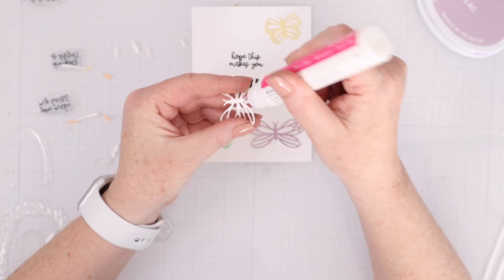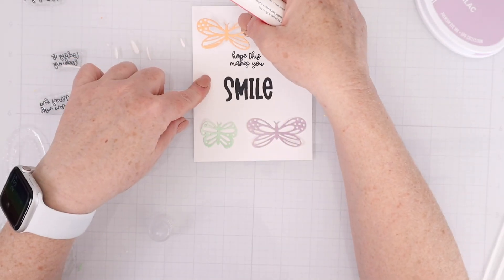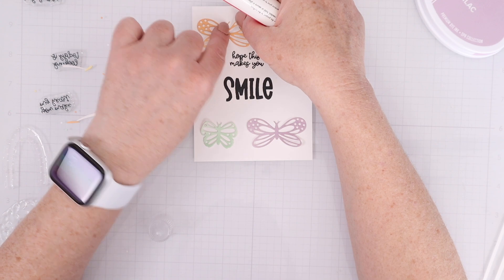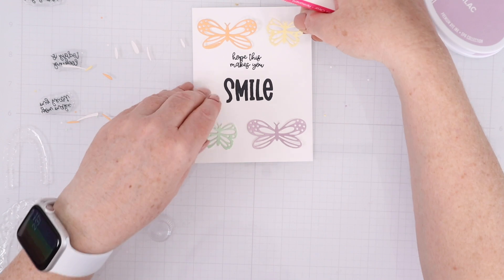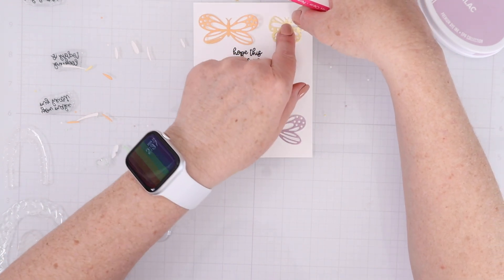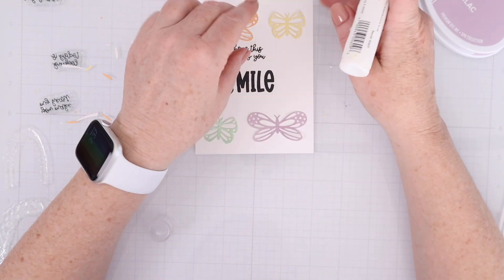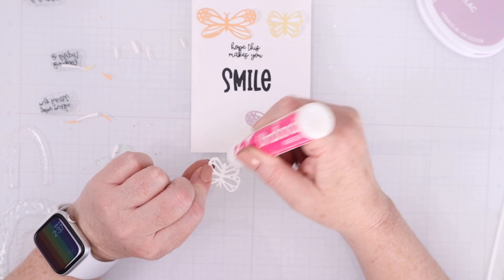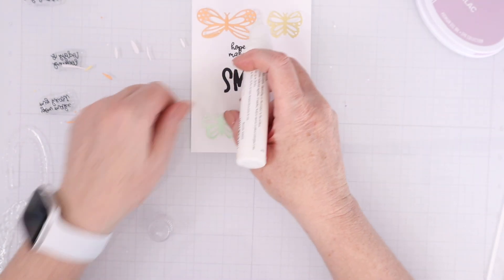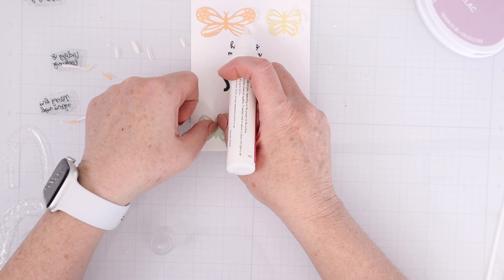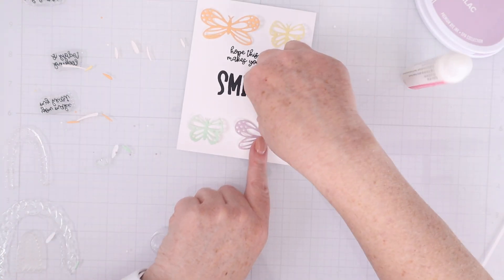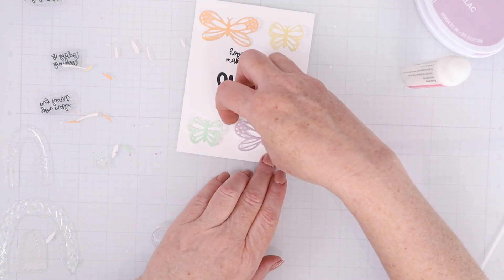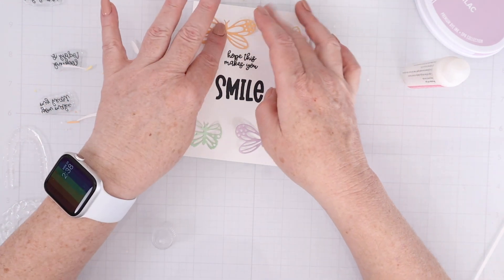I am going to trim down the panel to 4 by 5.25 and then I'm going to adhere those butterflies down into the top corners and bottom corners of the card. And again, I'm just going to put liquid adhesive on the butterfly body and adhere it down, hold it in place. Once they're dry, you can really pop up the wings, but I just like to hold them in place for a few seconds to make sure they're going to stay exactly where I put them. And then I just add that little bit of dimension by folding the wings towards the center.